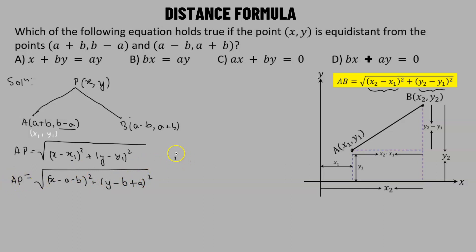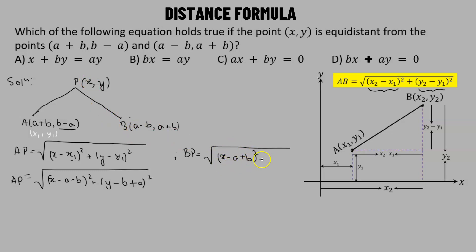Similarly, we find the length BP. BP equals the square root of x minus A plus B whole squared plus y minus A minus B whole squared.